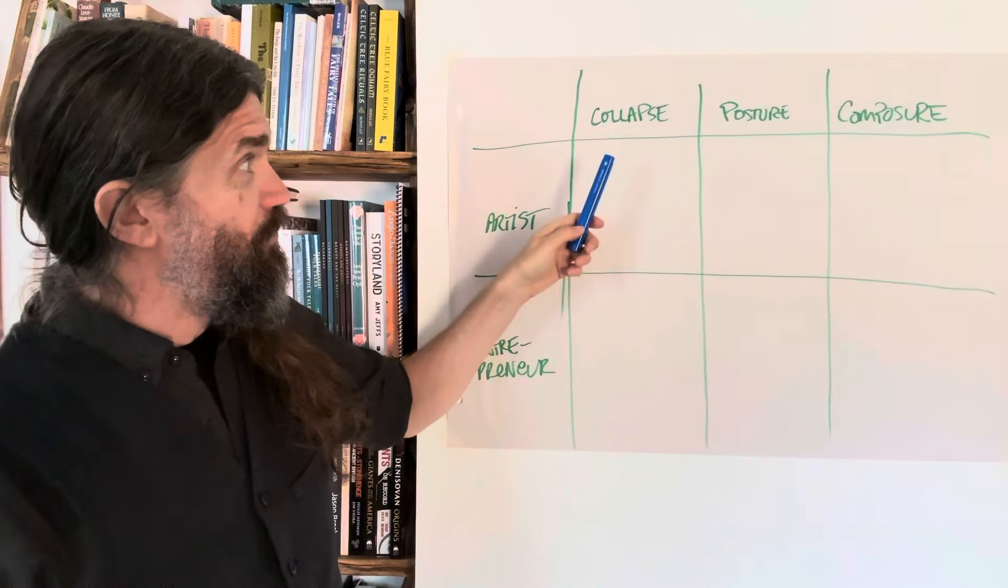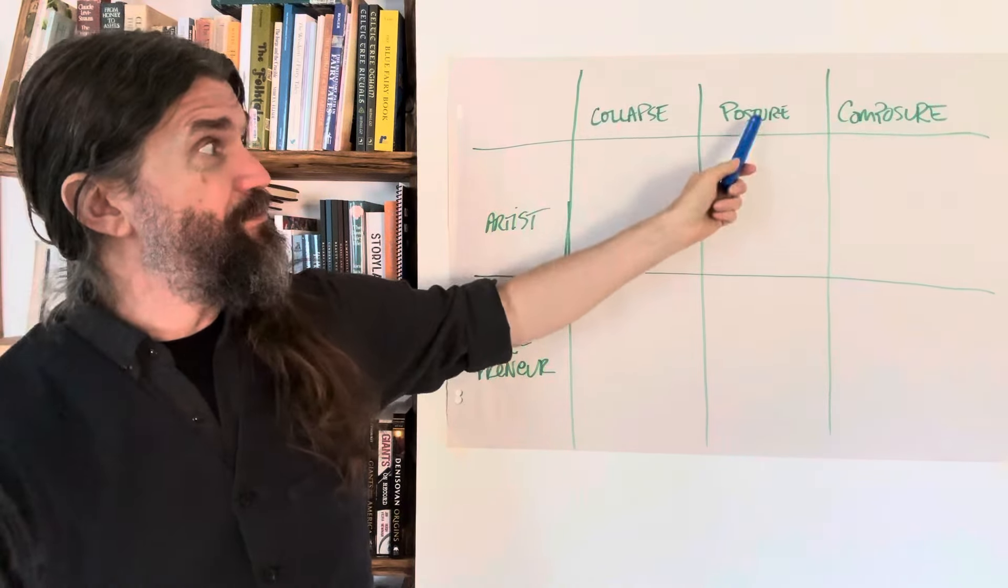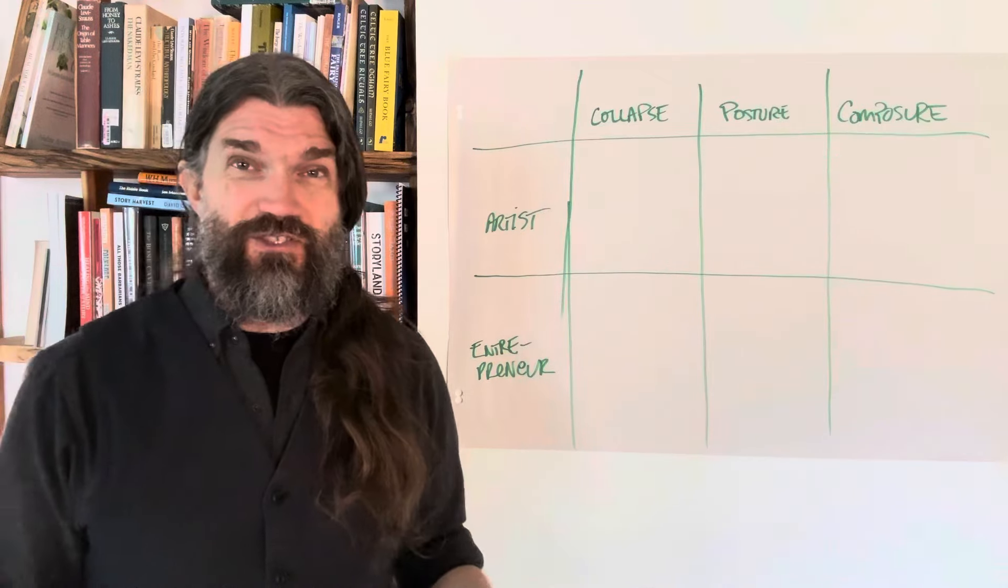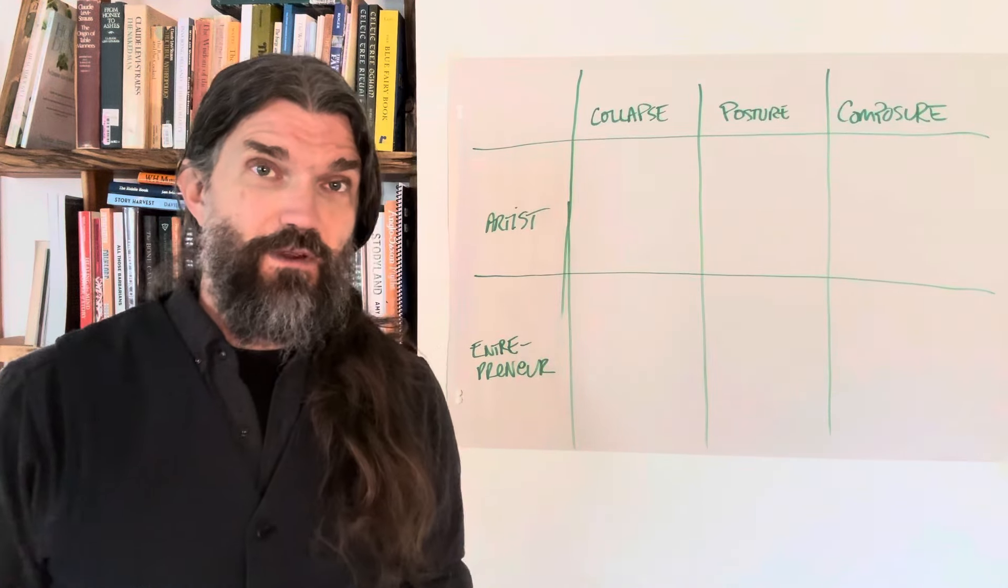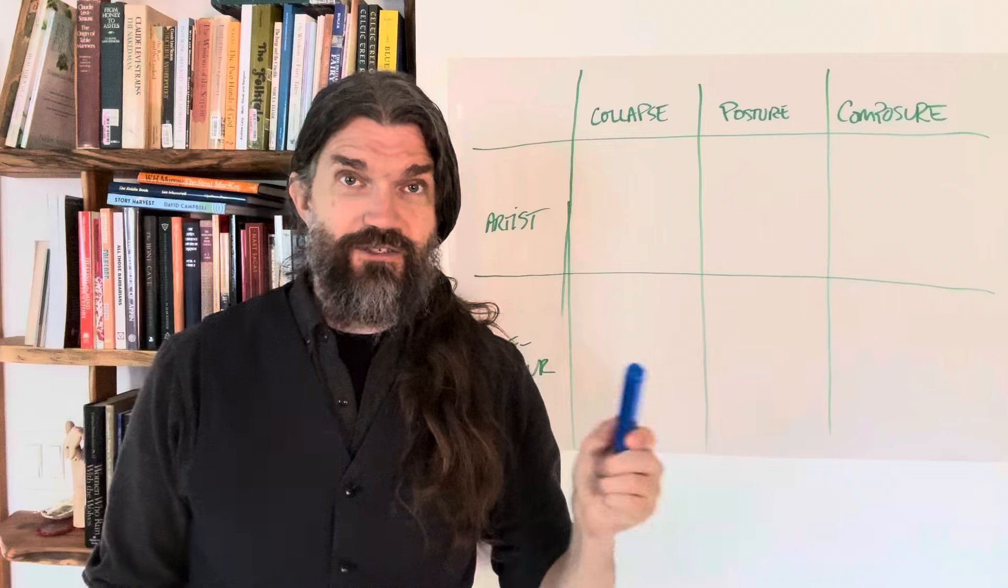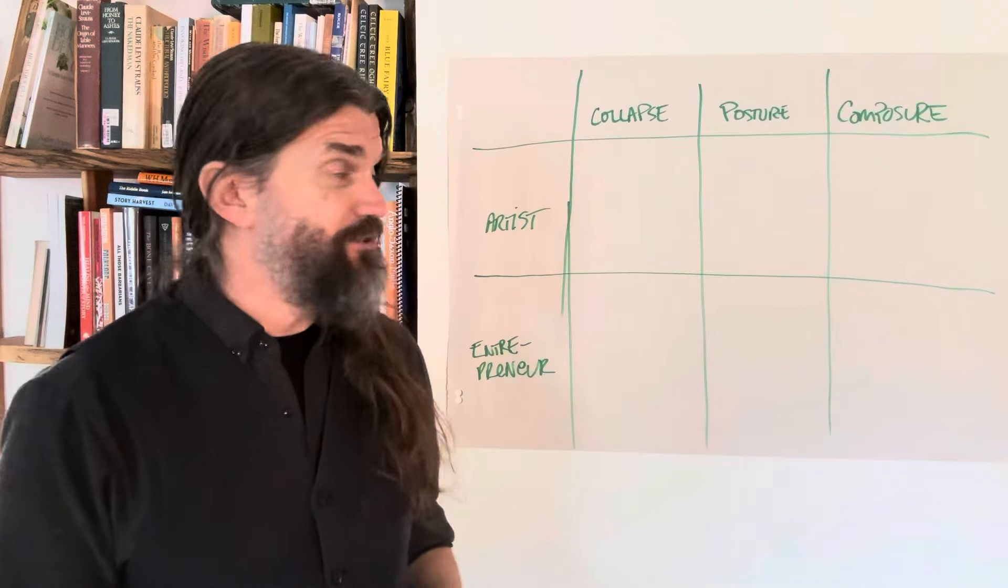And you've also maybe heard me in my starter kit talk about collapse, posture, and composure. And if you haven't, just check out the starter kit at marketingforhippies.com/starter-kit, and you'll be able to get your own copy of it.